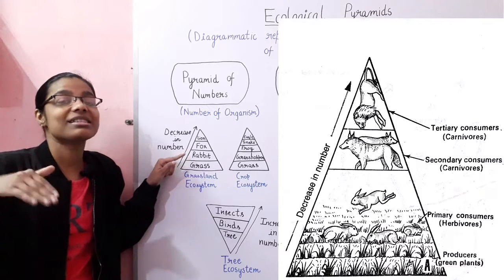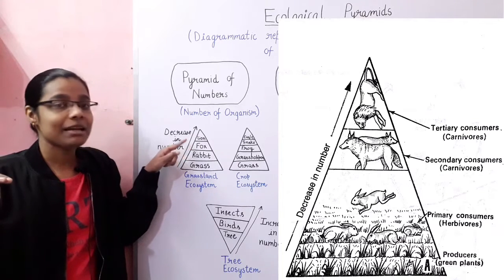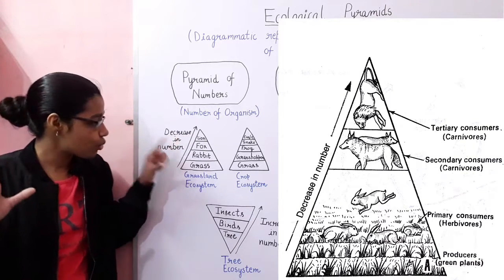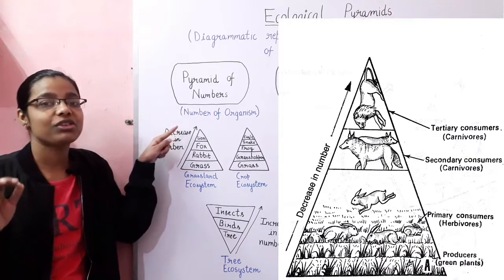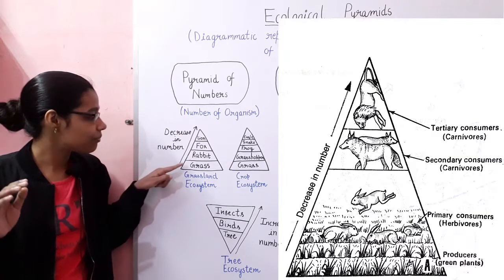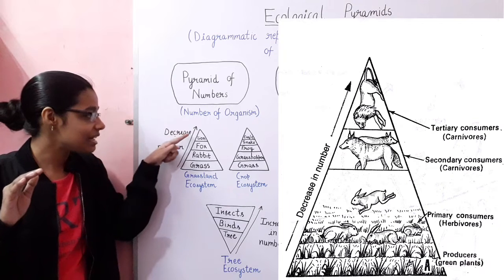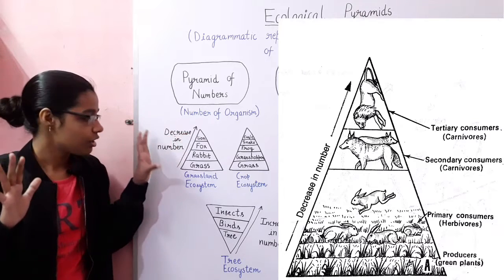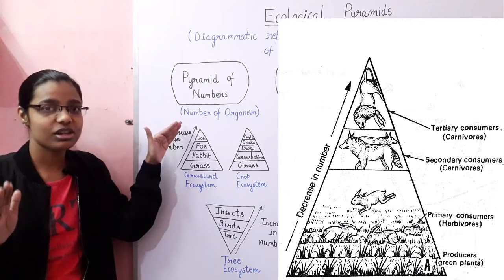Then fox eats rabbit, which is lesser in number in comparison to the rabbit, and finally the fox is eaten by lion, which is the top consumer and has the least number. This pyramid represents a decrease in number within each trophic level — maximum at the base with grasses, and least at the top with the top consumer.